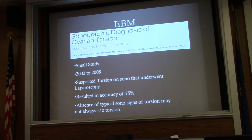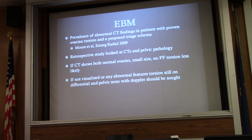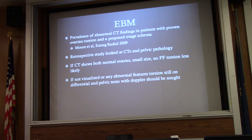Even if there's flow, if you suspect torsion, you should either admit the patient for observation or advocate for them to go to the OR. A 2009 Journal of Emergency Radiology article looking at CT findings in approximately 150 cases of proven ovarian torsion found that CT findings correlate well with ultrasound when suspicious features are visible, but if you can't visualize anything on CT, ultrasound is required. My practice is to do ultrasound first, then CT second, especially in younger female patients with pelvic pain.